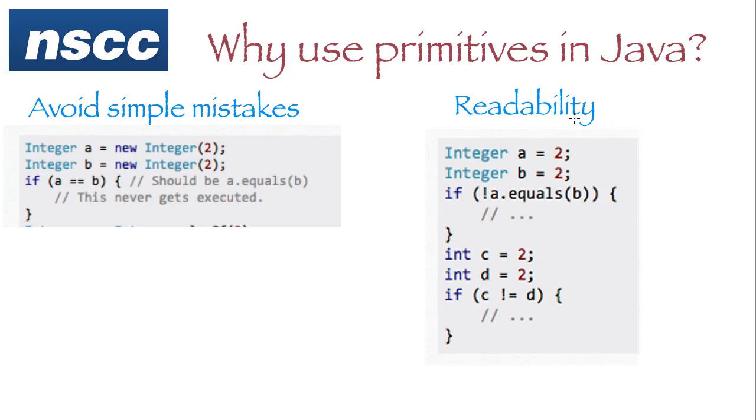Readability may be better if we use primitives. So here is the example of using primitives for integers and then saying if C is not equal to D, we execute a block. Here, if we're using objects, what we have to do is we have to use the method, not A equals B. And what they're saying is that this code is harder to read and understand what's going on than this is. So readability is better if we use primitives. And if readability is better, it's going to be easier to maintain and easier to debug.